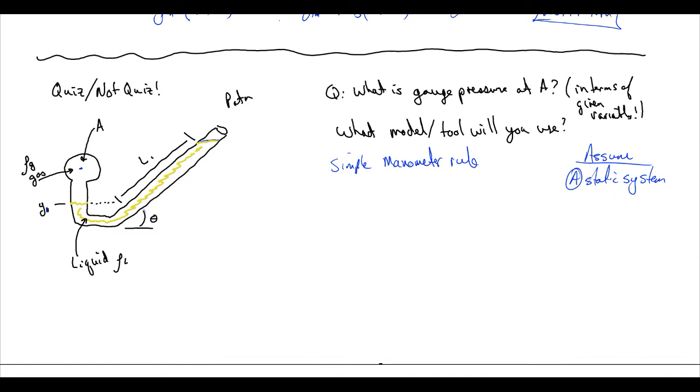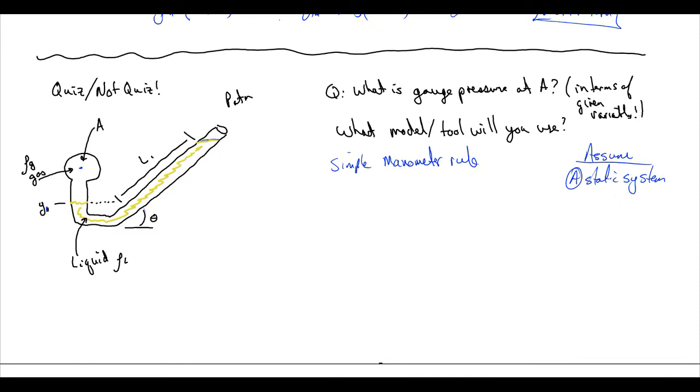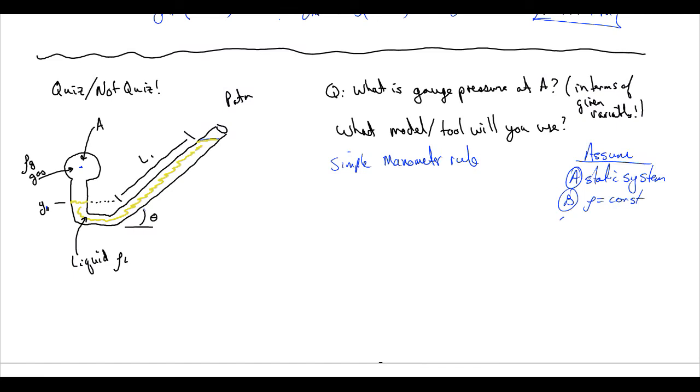B, density is equal to a constant, and C, rho is equal to a constant. Oh, I wrote that again. Gosh.